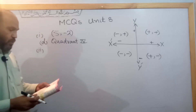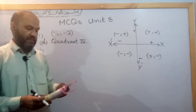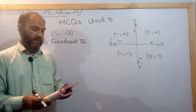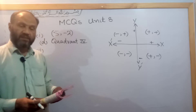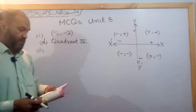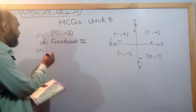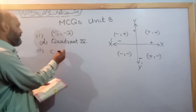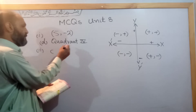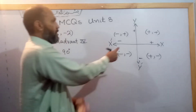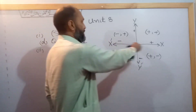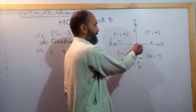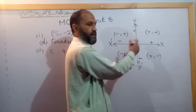The two coordinate axes intersect at an angle of 90 degrees. The correct option is C - 90 degrees. The x-axis and y-axis form a 90-degree angle.